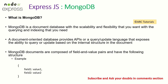So what is MongoDB? MongoDB is a document database with the scalability and flexibility that you want, with the querying and indexing that you need. It sounds like big jargon, but trust me, it's just JSON documents that you store, which is easy. There is no strict schema, but it's a JSON document which you store, providing flexibility so that we can add any kind of schema for different documents. The querying and indexing can be really flexible and increase performance. A document-oriented database provides APIs or a query update language that exposes the ability to query or update based on the internal structure of the document.